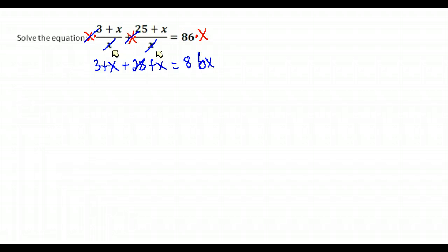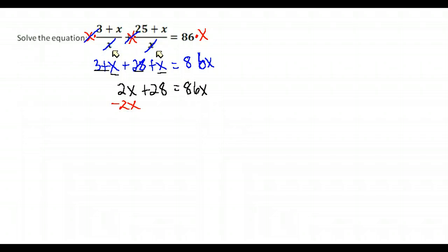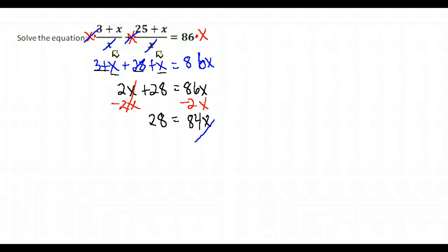Don't forget to multiply the right-hand side as well. Combine like terms: X and X gives 2X, and 3 and 25 gives 28, so we have 2X plus 28 equals 86X. Subtract 2X from both sides — 86 minus 2 gives 84X equals 28. To isolate X, divide both sides by 84. Our solution is 28 over 84.